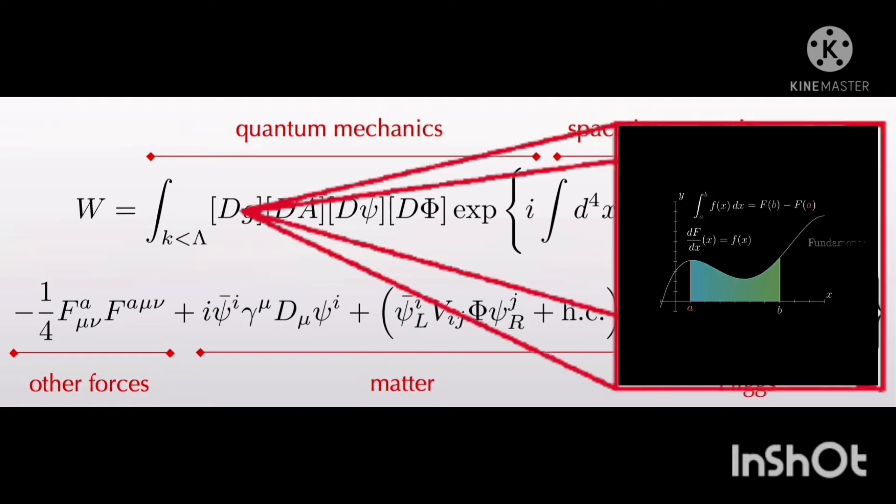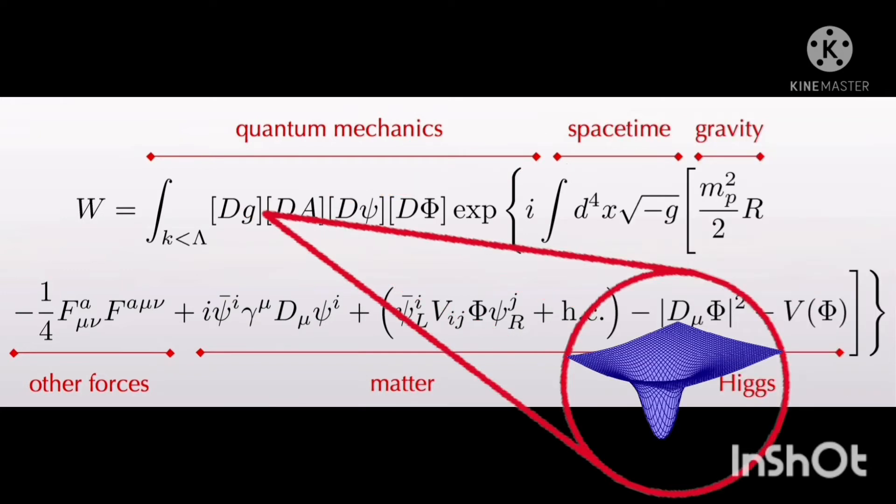The D in DG represents the infinitesimal quantities that are being added up in the sum of the integral and G represents gravity.